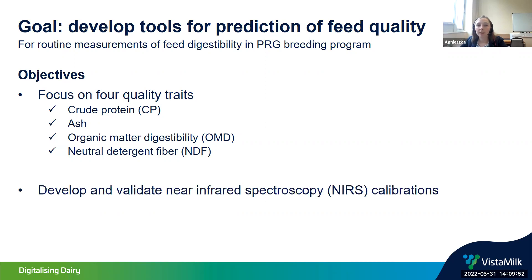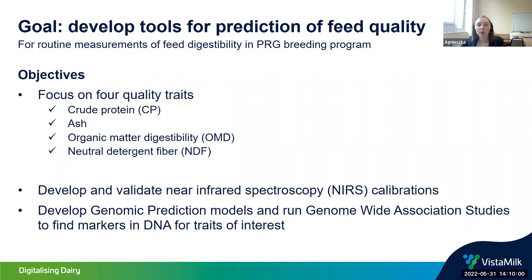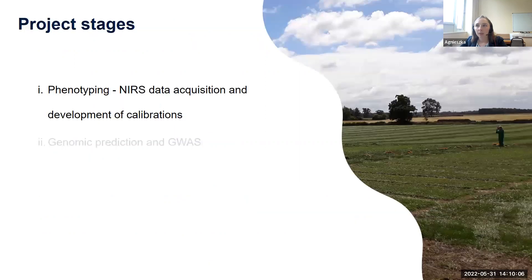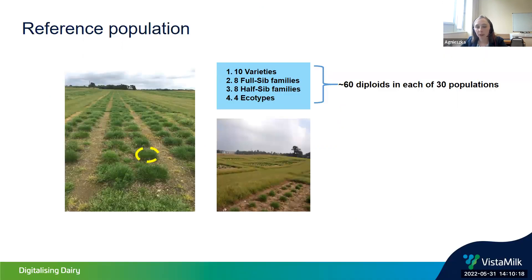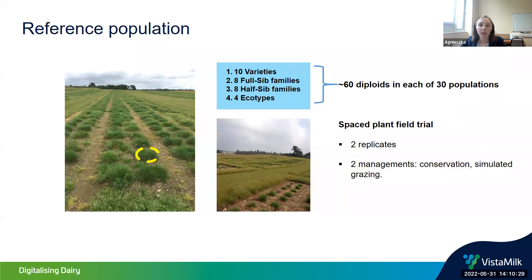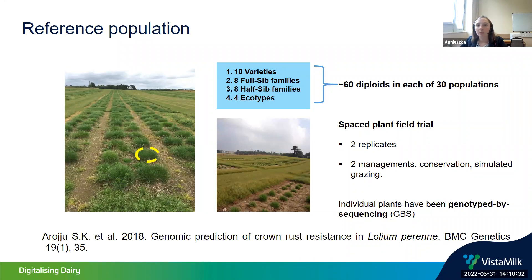I was to develop and validate new near-infrared spectroscopy calibration models, as well as develop genomic prediction models and run genome-wide association studies to find markers in DNA for traits of interest. For the first stage — phenotyping and NIR data acquisition — we had a reference population set up in an established space plant field trial with two replicates, two managements: conservation and simulated grazing.